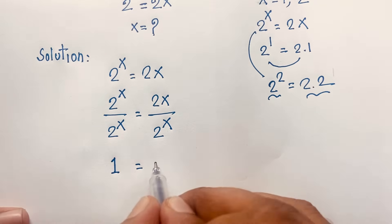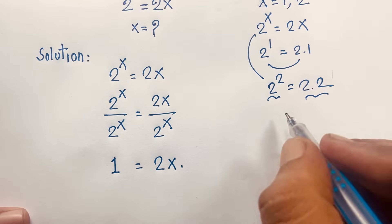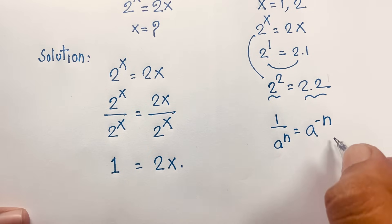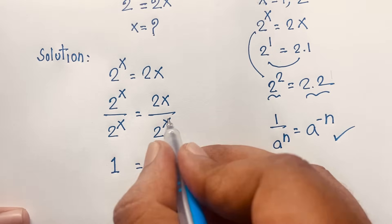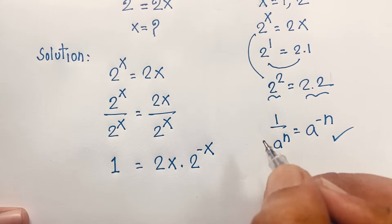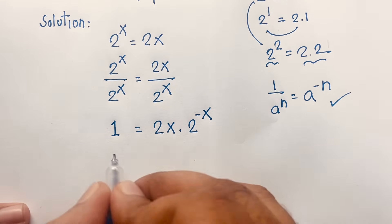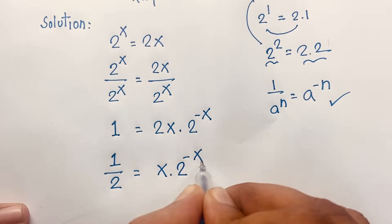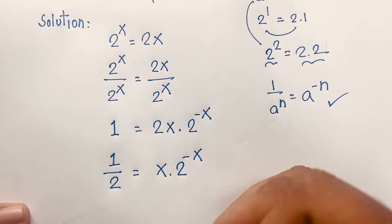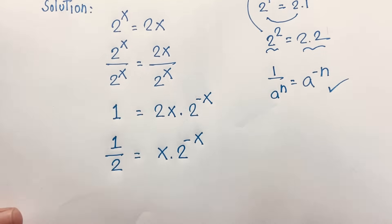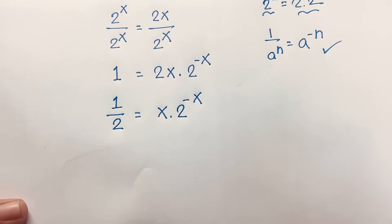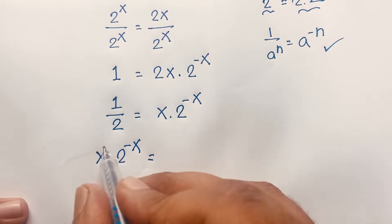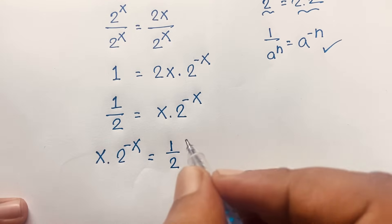Using the exponential law, 1 over a^n equals a to the power negative n, so 1 over 2^x becomes 2 to the power negative x. I then divide both sides by 2, giving 1 over 2 equals x times 2 to the power negative x.